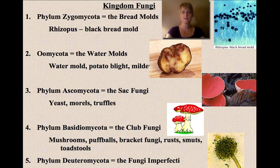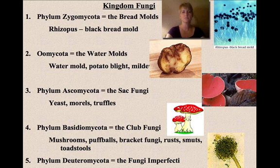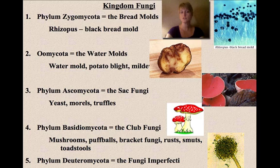The first phylum is the bread molds, which you would see on bread when it gets moldy. Then there are water molds. The sac fungi include yeasts, morels, and truffles. Basidiomycota is club fungi — these are the mushrooms and puff balls, and also included are rusts and smuts that infect plants. The last phylum is the fungi imperfecti.